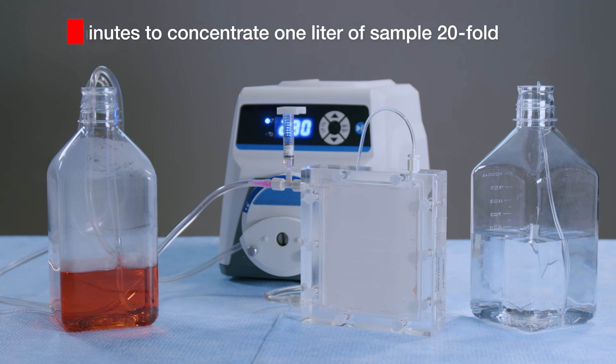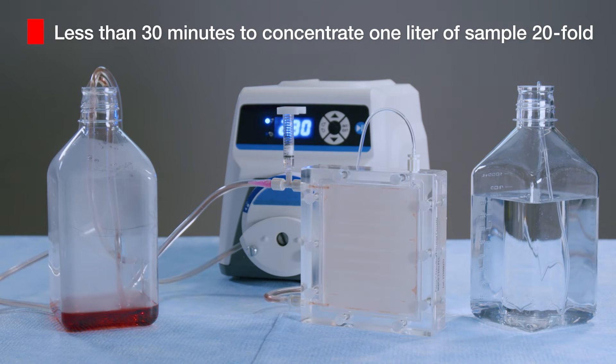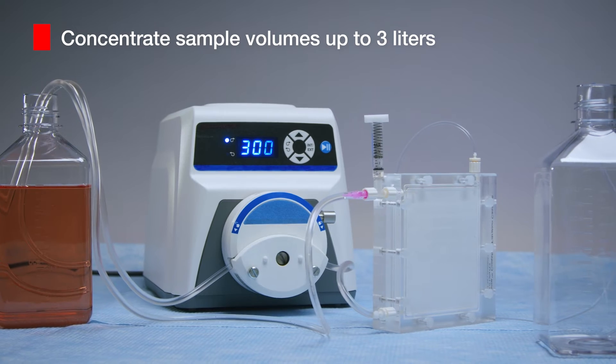The Pierce CrossFlow Filtration cassette takes less than 30 minutes to concentrate one liter of sample 20-fold. A single device can concentrate sample volumes up to 3 liters.